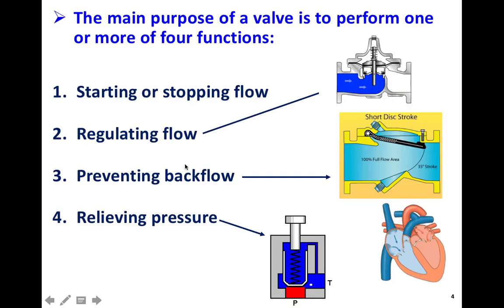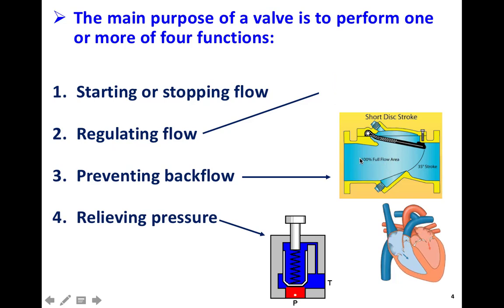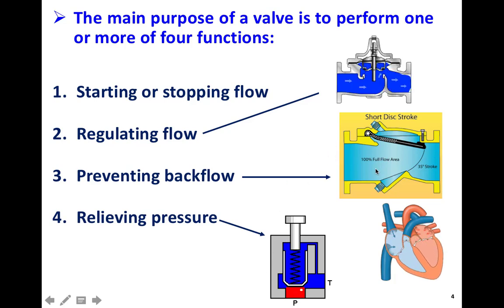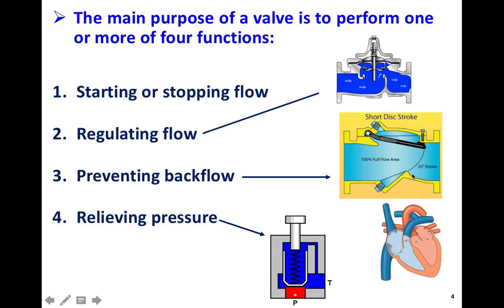Preventing backflow — we also call this a check valve. It is a valve that can allow the flow only in one direction. If we have a flow going from left to right, this gate is open. But once the flow is from right to left, this gate will be closed and it will block the opening of the pipe, and there won't be any flow from right to left. This gate can move from up to bottom.